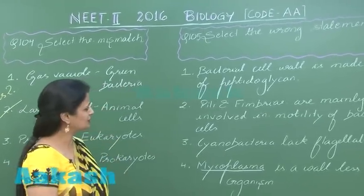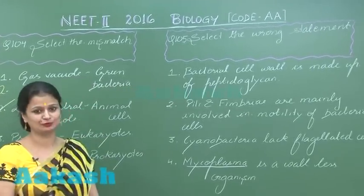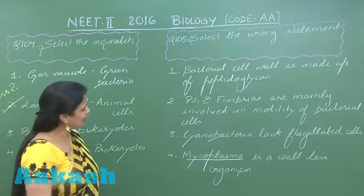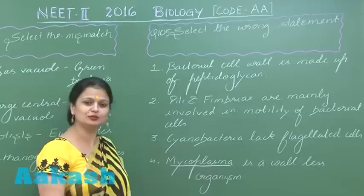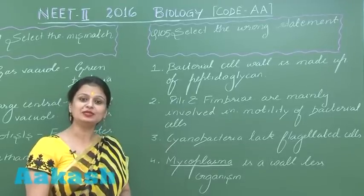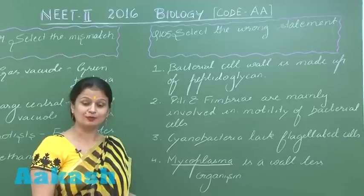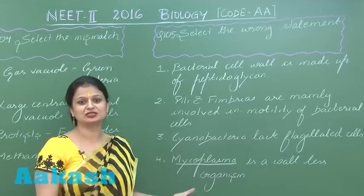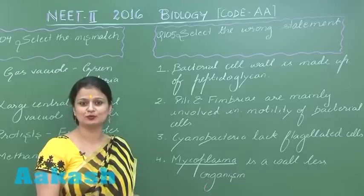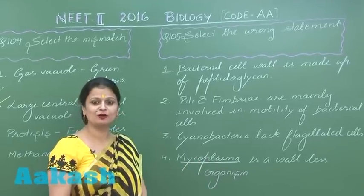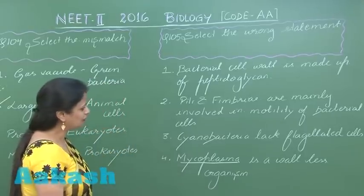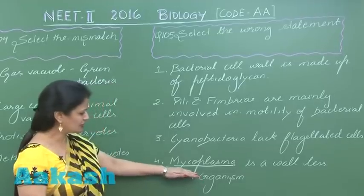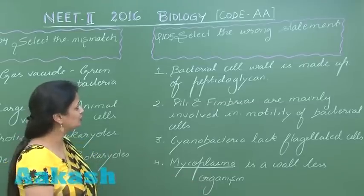Question 105: select the wrong statement. Bacterial cell wall is made up of peptidoglycan, also called murein — that is correct. Pili and fimbriae are surface structures present in the bacterial cell, but their function is not motility; they are involved in attachment. Motility is performed by the flagella. Cyanobacteria lack flagellated cells — correct. Mycoplasma is wall-less bacteria — also correct. So the wrong option is option number two.